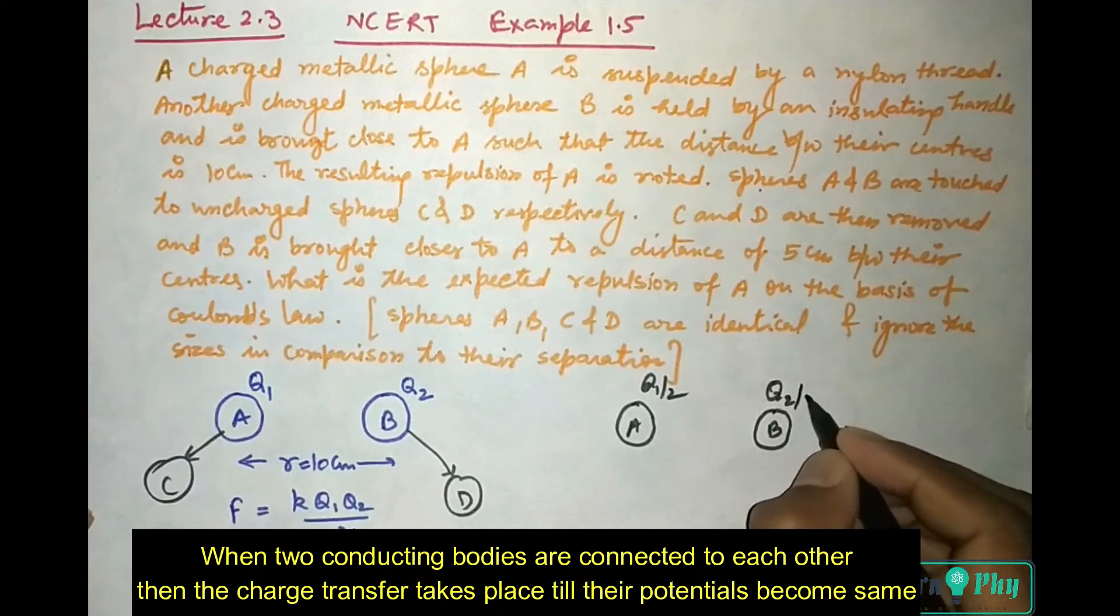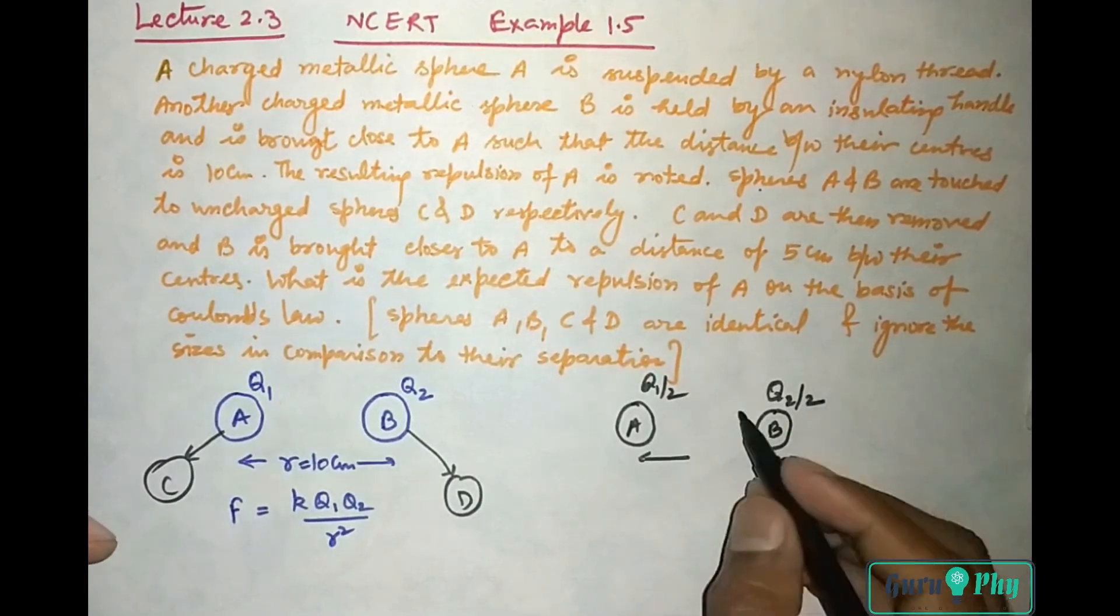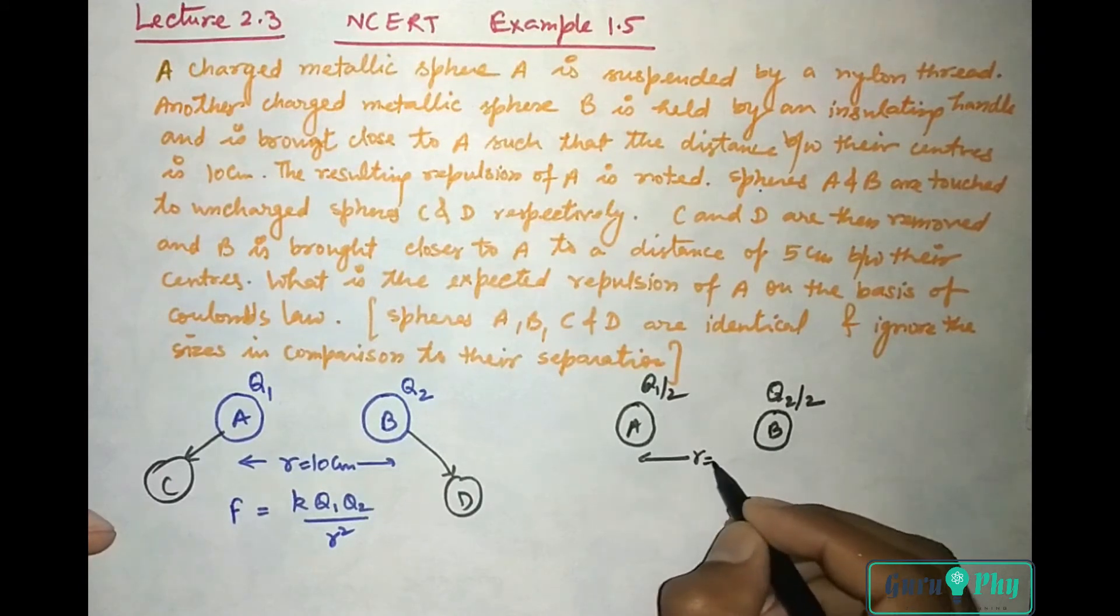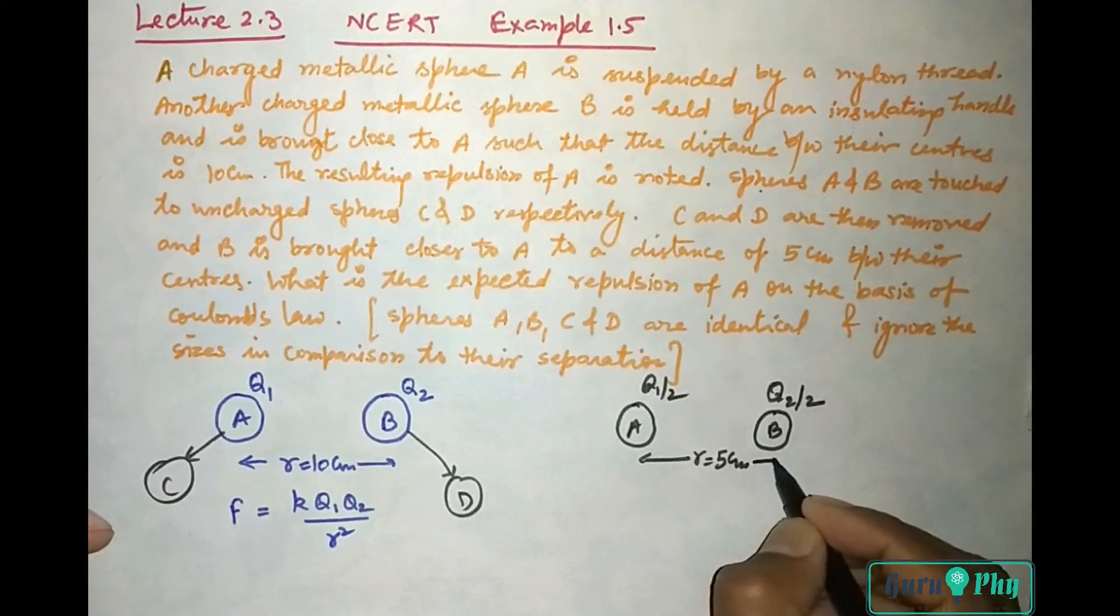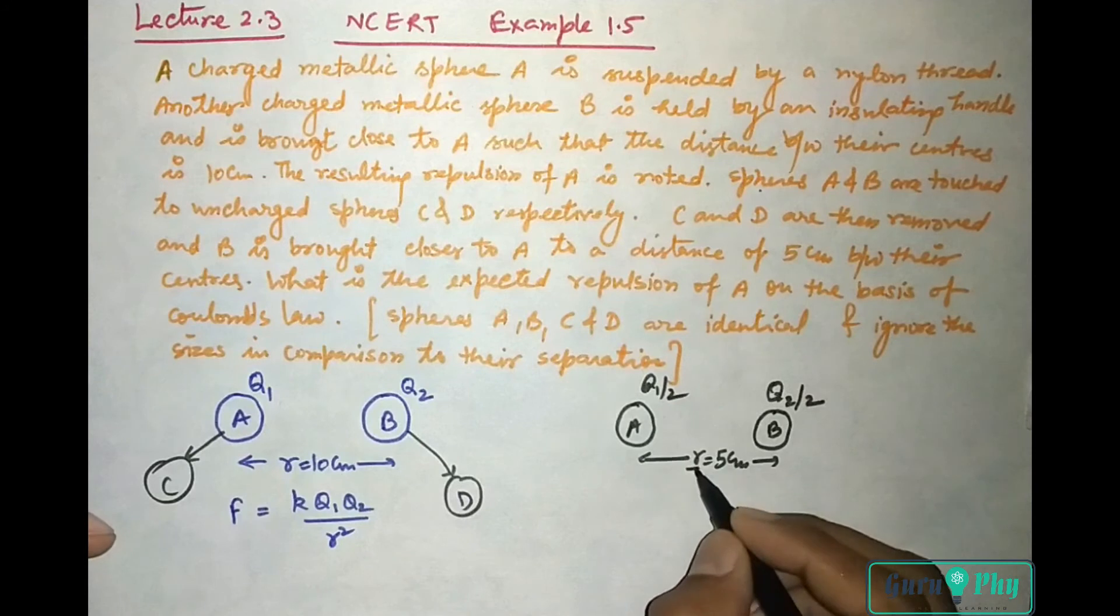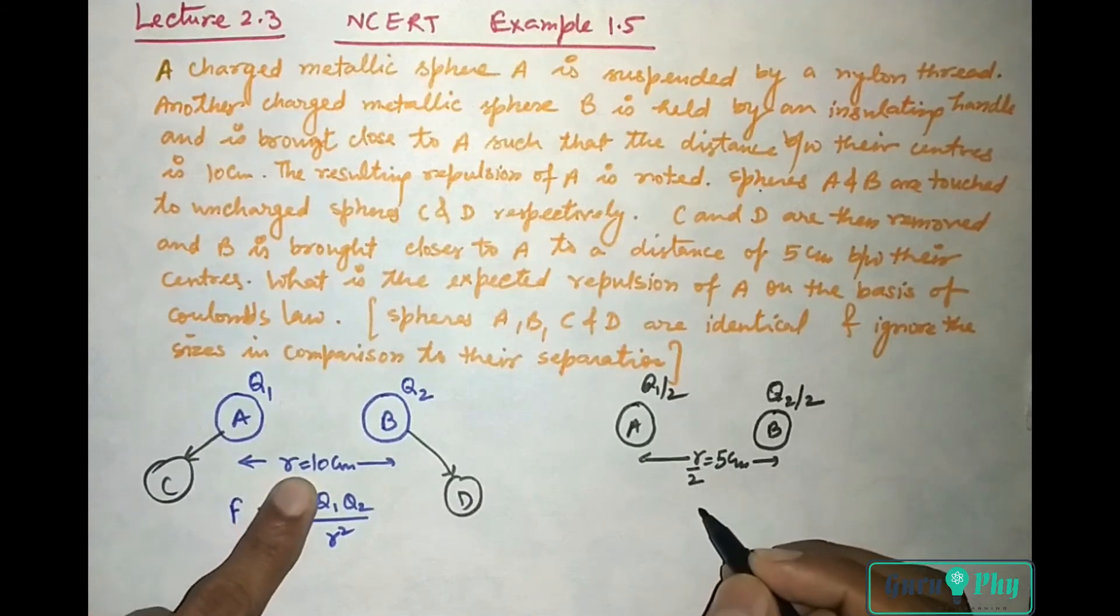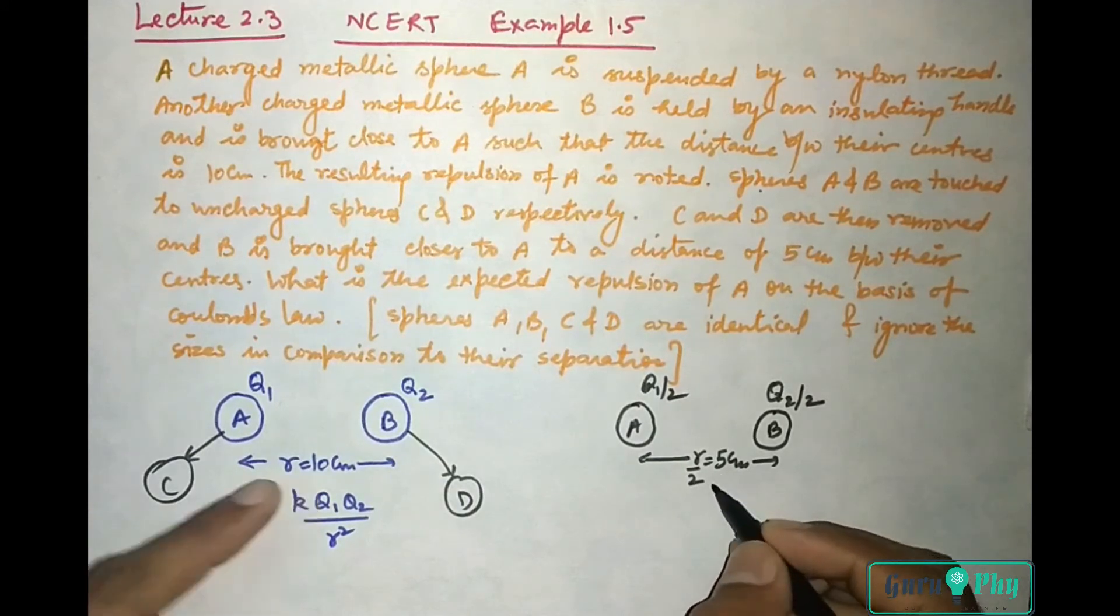Now the distance between them is 5 cm as given. So this is R by 2. Earlier it was R, now it will be R by 2.